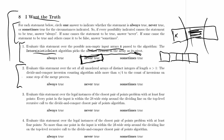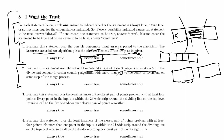Evaluate this statement over the set of all unordered arrays of distinct integers of length n greater than 1: the divide-and-conquer inversion counting algorithm adds more than n over 4 to the count of inversions on some step of the merge process. This algorithm is basically merge sort with an extra step. We divide an array in half, sort each half, and as we merge, if an element in the right half is smaller than one in the left half, it's also smaller than everything remaining in the left half — so we can count all of those as inversions at once, potentially adding much more than one at a time.